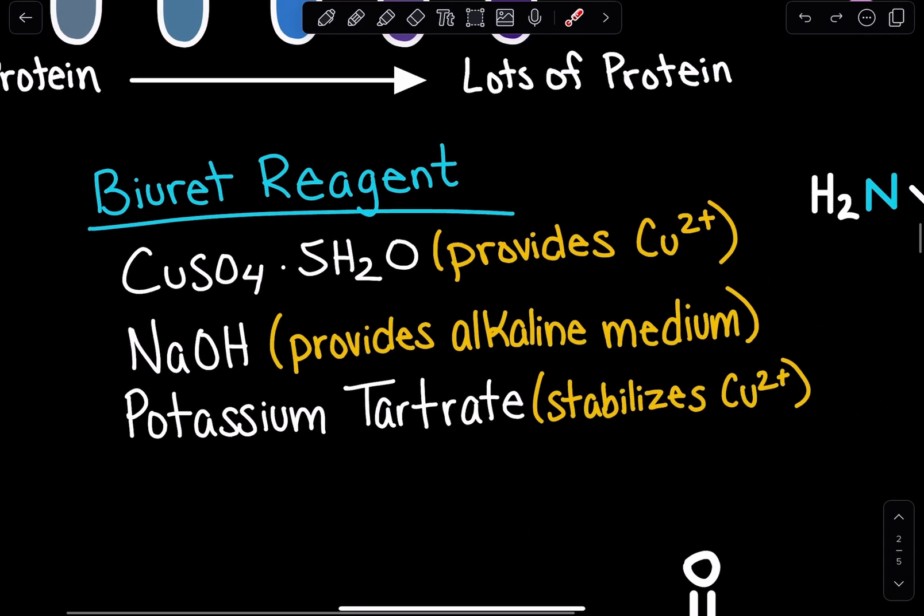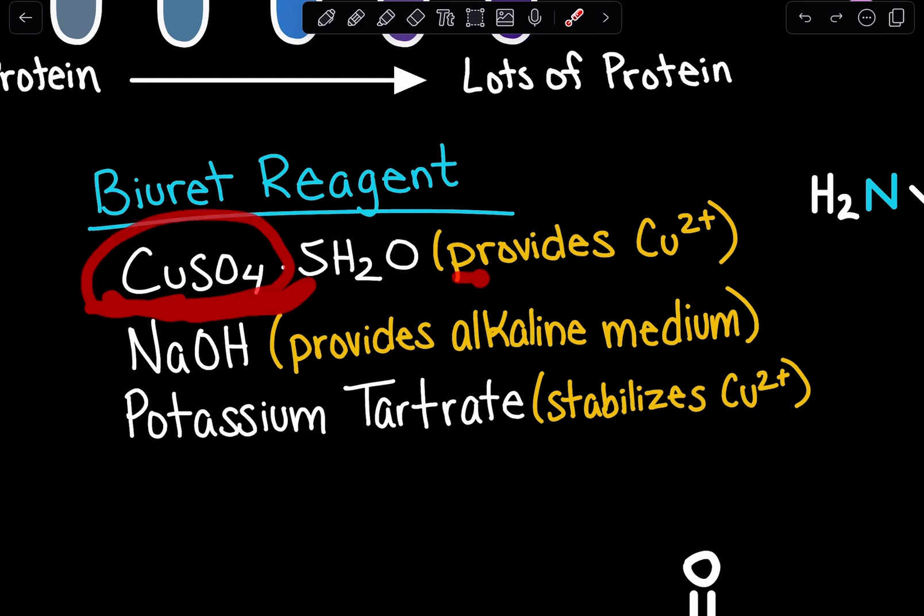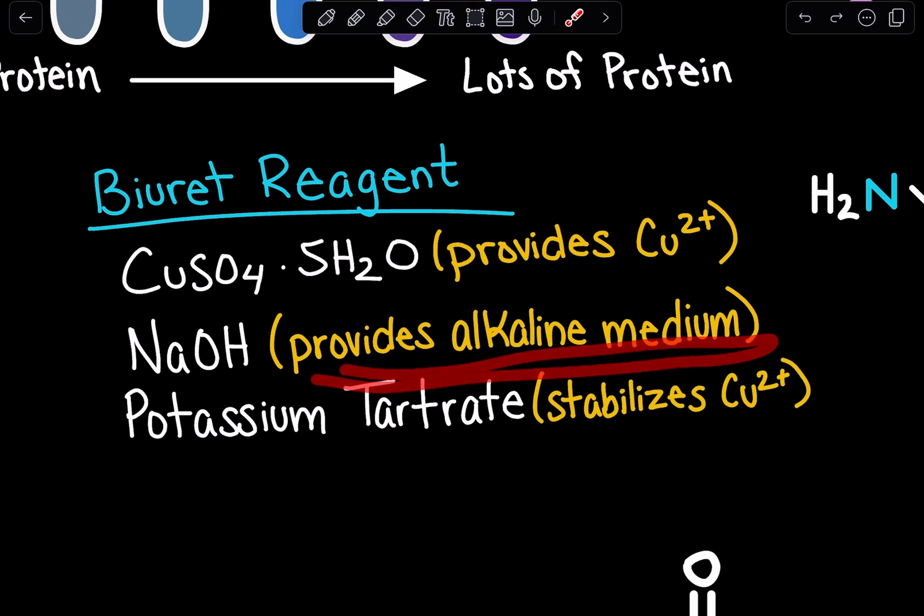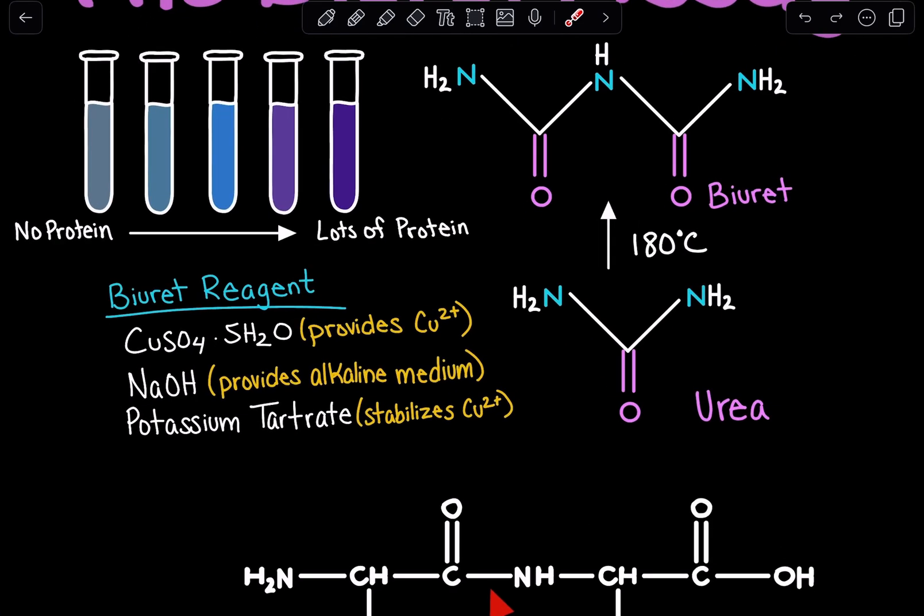Lastly, when we do this experiment in the lab, what is the Biuret reagent made up of? We need a source of ions, so copper sulfate will provide our copper ions. We need an alkaline medium, so we can use sodium hydroxide, or potassium hydroxide. And we have potassium tartrate, which is stabilizing our copper ions.